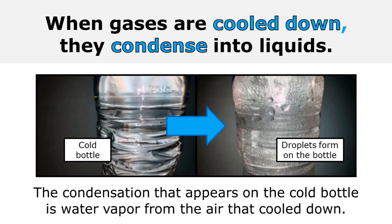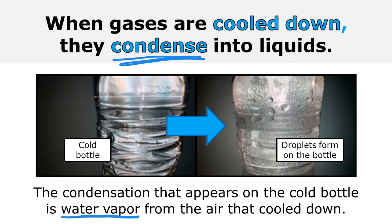When gases are cooled down, they condense into liquids. Here I have a cold bottle, and shortly after I take that cold bottle out of the refrigerator, droplets form on the bottle. The condensation that appears on the cold bottle is water vapor from the air that cooled down. There is water vapor in the air all around you, and when it hits something cold, like a cold glass, it turns from a gas into a liquid — that's why you get droplets of water on something that's cold.